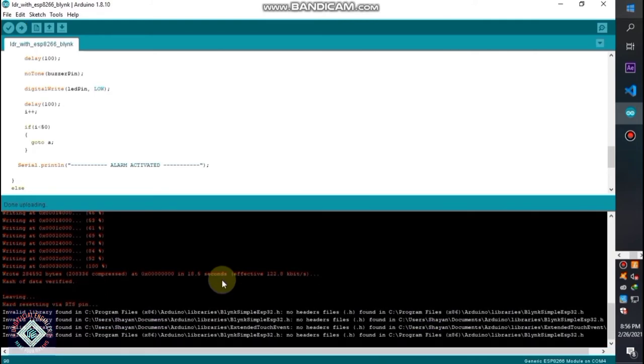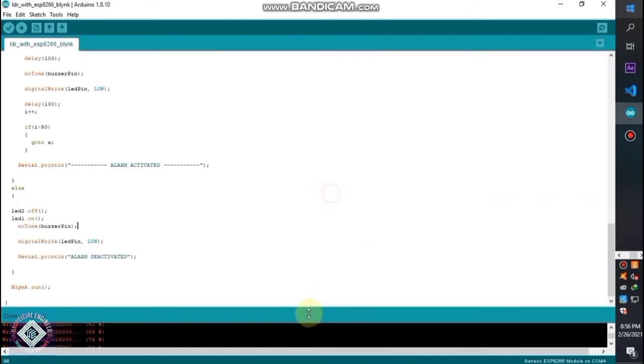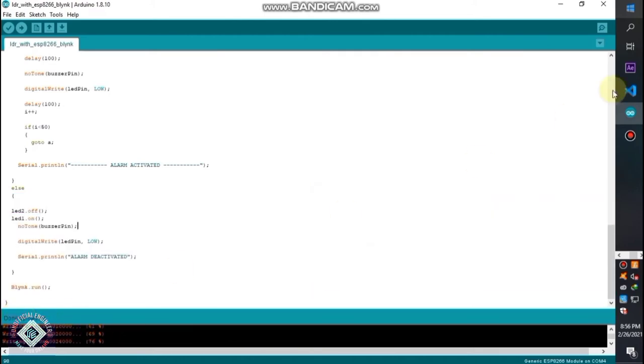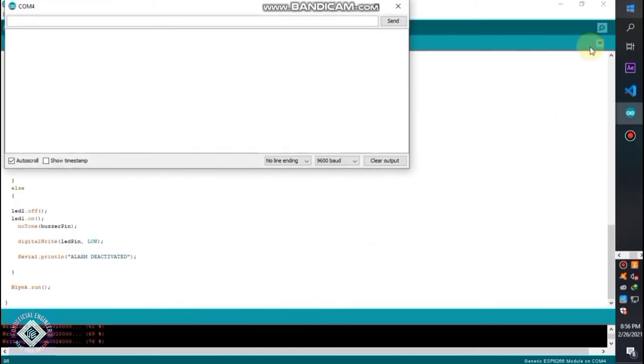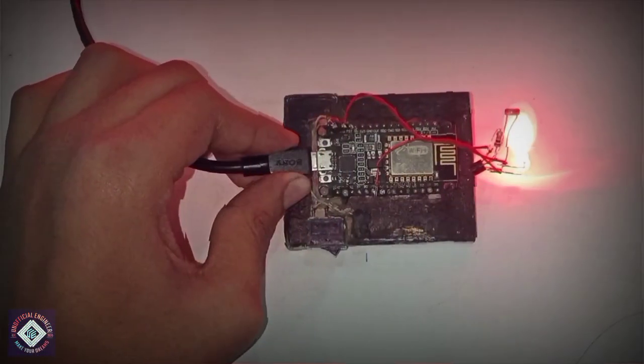And it's uploaded successfully. So let's go on to the serial monitor and check if my board is connected to the Blink server or not. Set your correct baud rate and click the reset button on your board. You can see my IP address here, the board is connected to the Blink server.